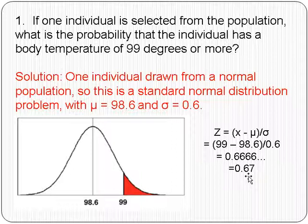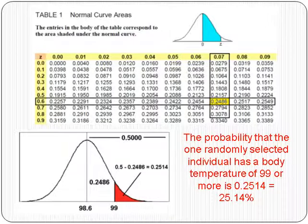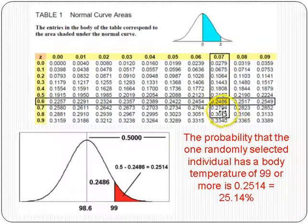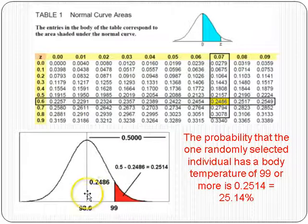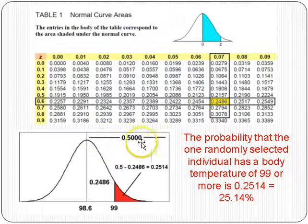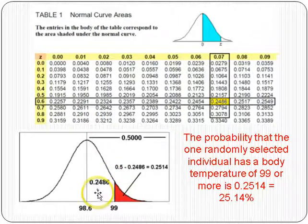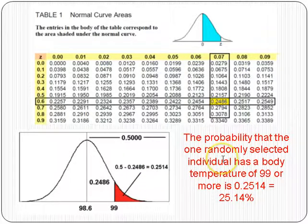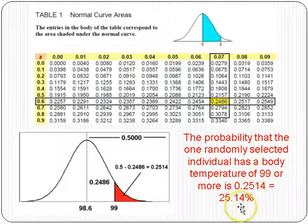On the table we use in class, it's accurate to the hundredths place. Looking up a Z-score of 0.67 gives a probability of 0.2486. The table gives the probability of being between the mean and the score. Since 50% of data values are greater than the mean, the probability of 99 or more is 0.5 minus 0.2486, which is 0.2514, or 25.14%.